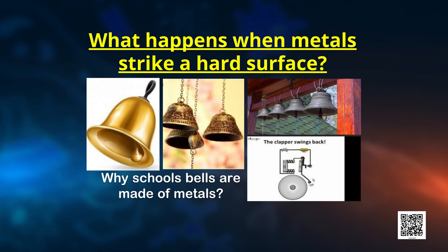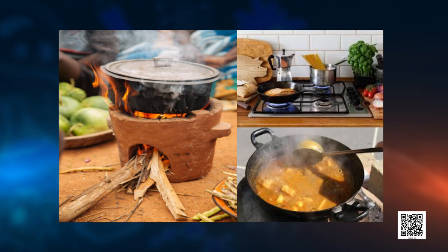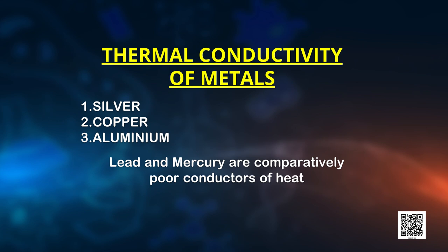Quiz question four: have you heard the ringing sound of a bell in school? Which property of metal am I talking about? Absolutely correct — it's sonorous. Quiz question number five: cooking vessels are made of metals — do you know why? Of course, they are good conductors of heat and have high melting points. The best conductors of heat are silver and copper, but obviously we cannot use them as cooking vessels. Lead and mercury are comparatively poor conductors of heat. Your experiences and observations of real-life situations help a great deal in the construction of knowledge.